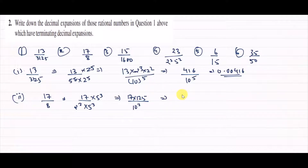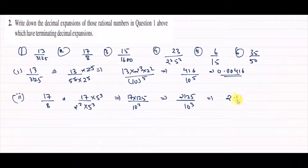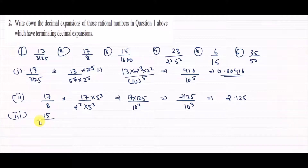So we get 17 into 125, divided by 10 to the power 3. 17 multiplied by 125 gives 2125. Then we place the decimal point 3 places from the right, giving us 2.125.